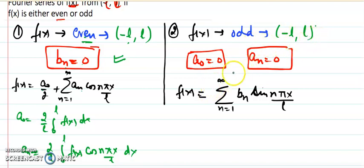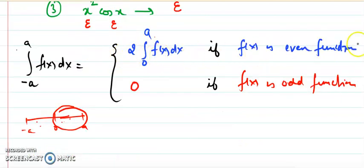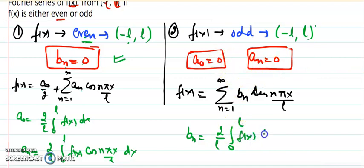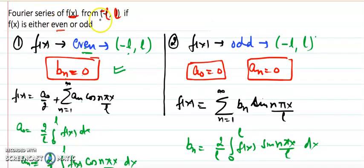So for an odd function, we only have one term in the Fourier series — the sine part — and bₙ is calculated by the formula bₙ = (2/l)∫₀ˡ f(x) sin(nπx/l) dx, integrating from 0 to l and doubling. These formulas apply for any symmetric interval: -1 to 1, -2 to 2, -π to π, etc. However, this concept only applies when the interval is symmetric (negative to positive); if it is 0 to 2l, we cannot apply this concept.